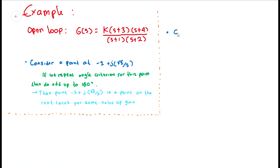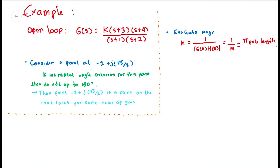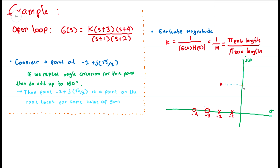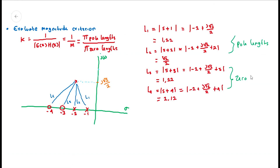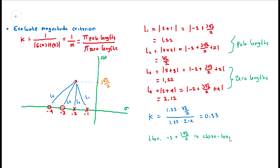We can then determine the value of gain K so that the point in question satisfies the magnitude criterion. We know that K equals 1 over the absolute value of G(S) times H, which equals the product of pole lengths over the product of zero lengths. We plot the roots of the open-loop system, place the point minus 2 plus j√(2)/2, and draw straight lines from each root to the new point, naming them L1, L2, L3, and L4. The pole lengths and zero lengths give us K equal to 0.33, so minus 2 plus j√(2)/2 is a closed-loop pole of the system at gain K equal to 0.33.